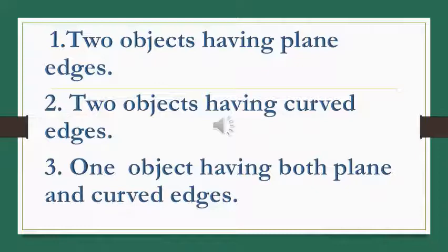Two objects having plane edges, then two objects having curved edges and one object only, the object which is having both plane and curved edges. If you are not having these objects, you can refer your mathematics book. Many objects are given in the lesson.